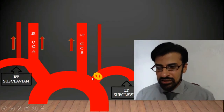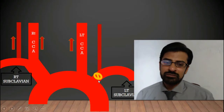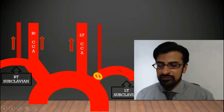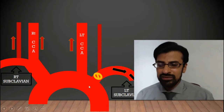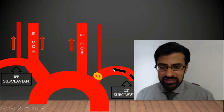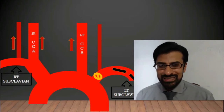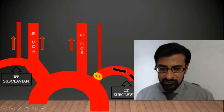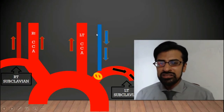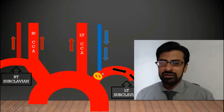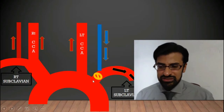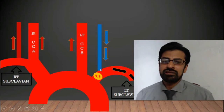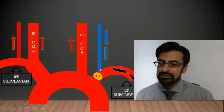When this patient with severe stenosis at the proximal part of the subclavian artery starts exercise, the requirement of blood to the upper limb is increased. But blood entering from the aorta into the subclavian artery is not sufficient. So in this situation, blood starts moving down from the vertebral artery to enter into the subclavian artery. The presence of severe stenosis in the proximal subclavian artery and reversal of blood within the vertebral artery is called subclavian steal phenomenon.